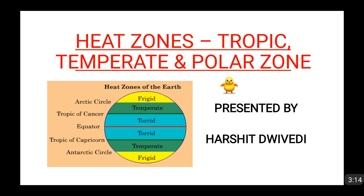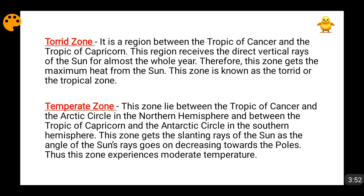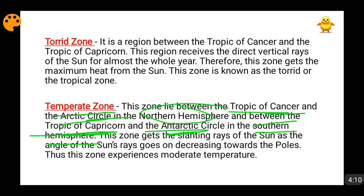Moving forward, we will talk about the temperate zone. This temperate zone is that zone which lies between the tropic of cancer and the arctic circle in the northern hemisphere, and between the tropic of Capricorn and the antarctic circle in the southern hemisphere. Now it is important because here in this area, the sun is not exactly above these latitudes, so the rays of the sun will not reach directly — they will reach at an angle, in a slanting manner.